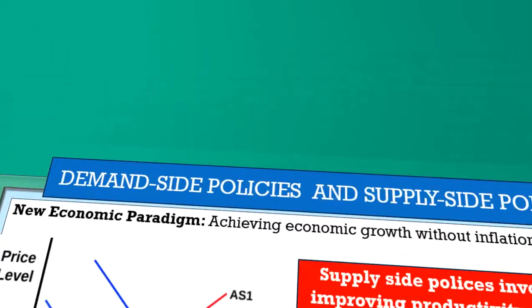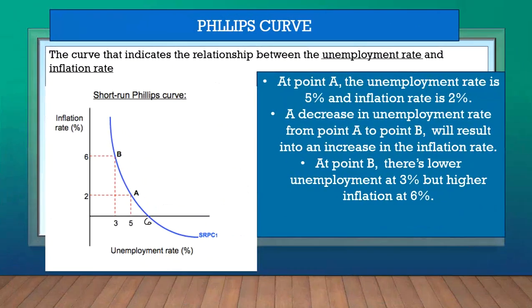Now for the last part of the video: the Phillips curve. The Phillips curve shows the relationship between the unemployment rate and the inflation rate. The unemployment rate is on the x-axis and the inflation rate is on the y-axis. For example, at point A, the unemployment rate is 5% but inflation is fairly low at 2%.